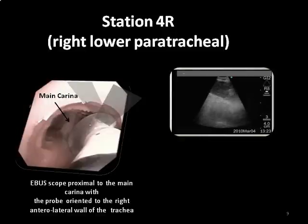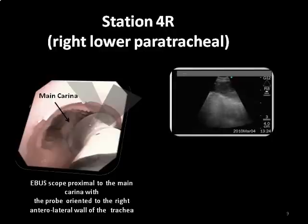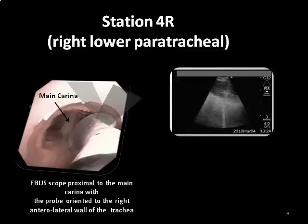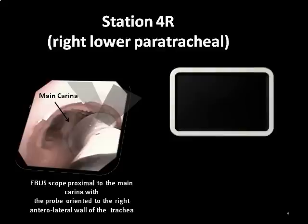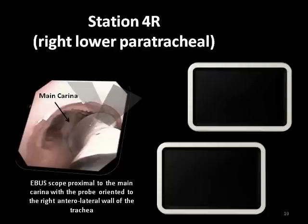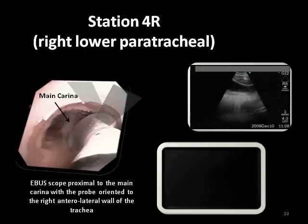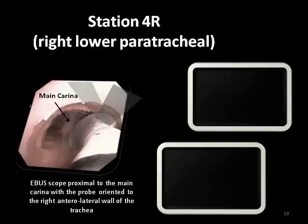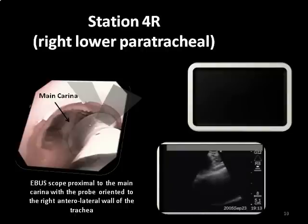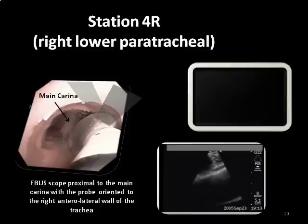In this video, the transducer is oriented laterally; the lymph node is seen just above the azygous vein, and distally, the normal lung is visualized. In the next video, the transducer is oriented anterolaterally so that a lymph node is seen in front of the superior vena cava. In the bottom video, the transducer is oriented anteriorly: Station 4R is seen above the pulmonary artery located at the 9 o'clock position, and in front of the superior vena cava, which lies in front of the ascending aorta.